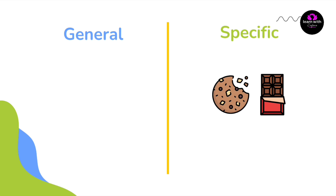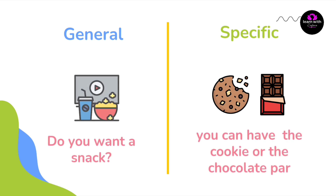Do you want a snack? — هل تريد وجبة خفيفة؟ ما حددنا وش نوعها، ممكن اي شيء. في الاسماء نقول: You can have the cookie or the chocolate bar — تقدر تاخذ البسكويت او الشكولاتة، وهنا حددنا ان عندك snacks بس اثنين.